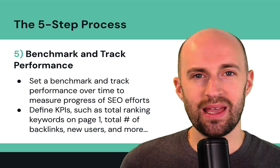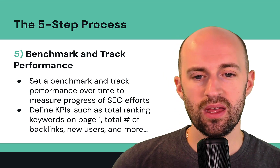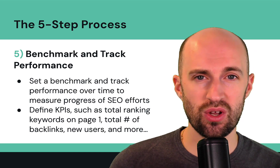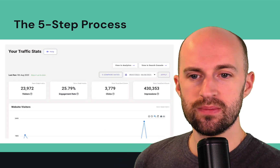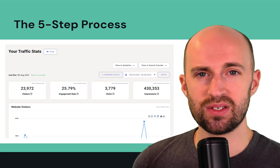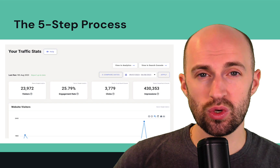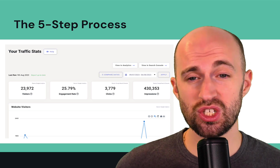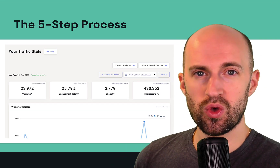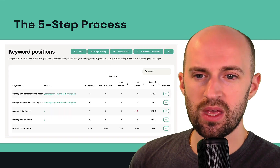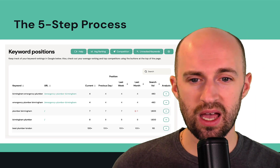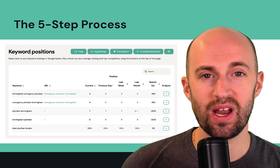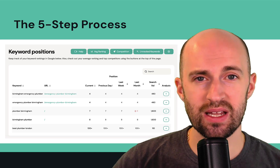Another KPI is new users — how many new users come to your site. In Hike SEO, you can look at your traffic stats, which are directly imported from Google Search Console and Google Analytics, and see visitors, engagement rate, clicks, impressions, and trends over time. You can also track keyword positions in Hike — add keywords you want to track and see the current ranking, previous day, last week, and last month, so you can see trends in your keyword performance and which pages are doing well.